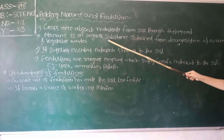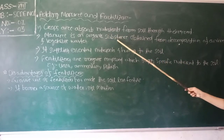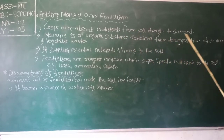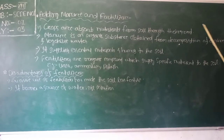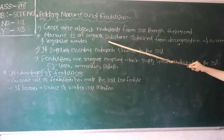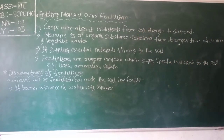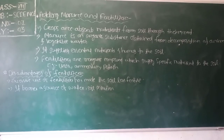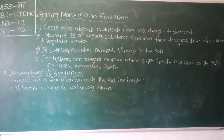What is manure? Manure is an organic substance obtained from the decomposition of animal and vegetable matter. It supplies essential nutrients and humus to the soil and makes it fertile.